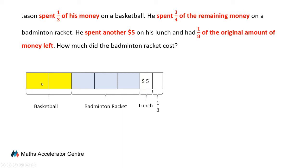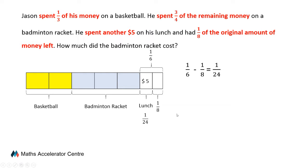Therefore, each of these units is actually one-sixth of the original sum of money. Therefore, this remaining unit is one-sixth of the original amount of money. The next thing to do is to find the fraction representing the amount spent for lunch. We know that the entire unit is one-sixth, and after spending for lunch he has one-eighth left. Therefore, we subtract one-eighth from one-sixth and we get one out of twenty-four. So one out of twenty-four is the fraction he spent on lunch, and one out of twenty-four equals the five dollars.